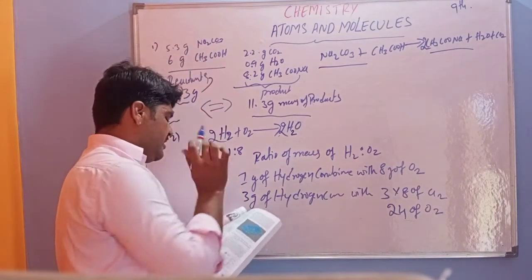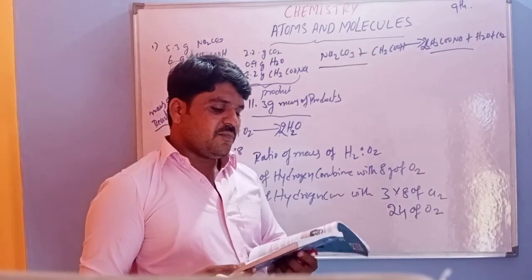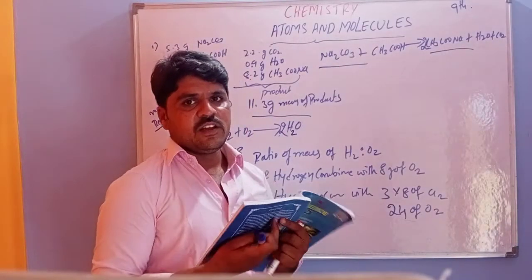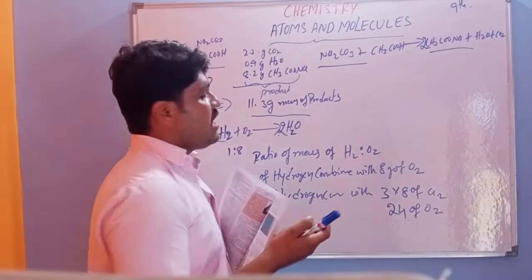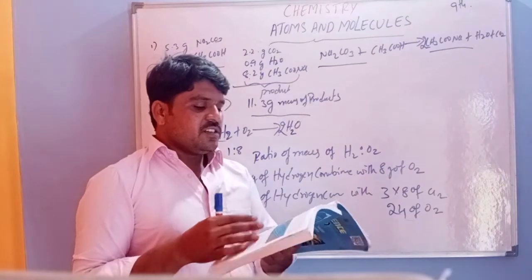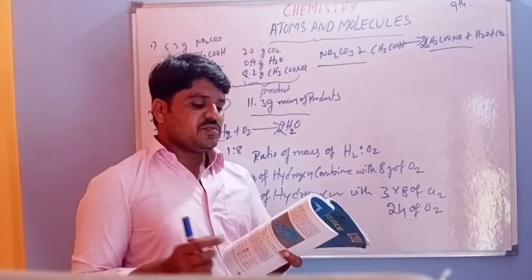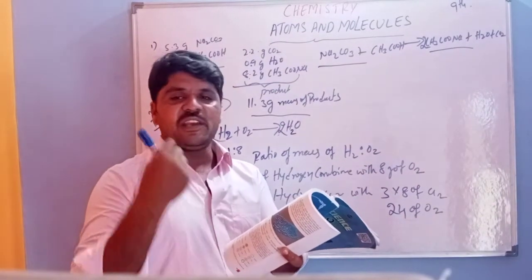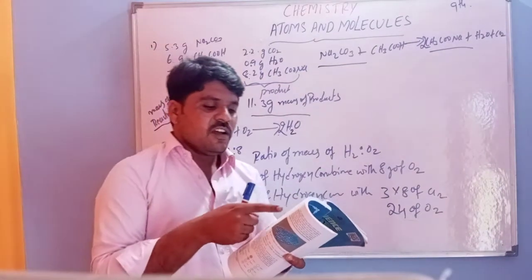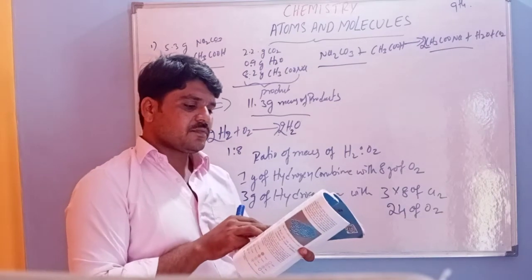Third question: which postulate of Dalton's atomic theory is the result of the law of conservation of mass? The law says mass can neither be created nor destroyed. The second postulate states that atoms are indivisible particles which cannot be created or destroyed in a chemical reaction. This second postulate is similar to the law of conservation of mass.